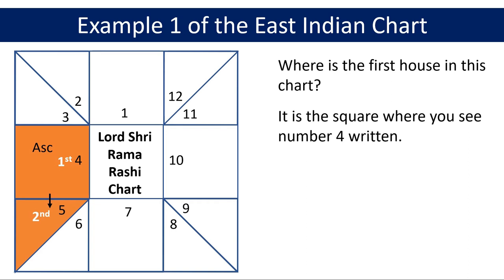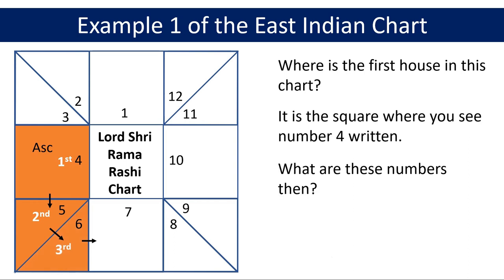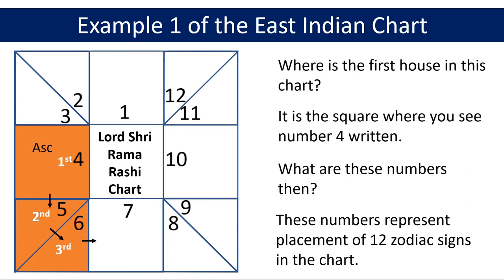In the same way, the third house is the next triangle in the anticlockwise direction where you see number six written, and so on. So what are these numbers then? These numbers represent the placement of the 12 zodiac signs or Rashis in the chart — with one representing Aries or Mesha, two representing Taurus or Rishabha, three representing Gemini or Mithuna, and so on till we reach number 12 representing Pisces or Mina. The positions of these 12 zodiac signs or Rashis are always fixed in the East Indian chart. In this chart, the sign of the ascendant is Cancer or Karka, represented by number four. In Vedic astrology we can also reference the ascendant by its sign, so we can refer to this as Cancer ascendant or Karka lagna.